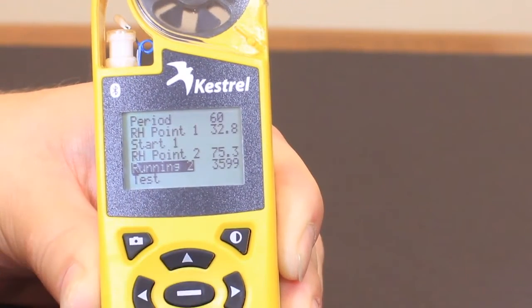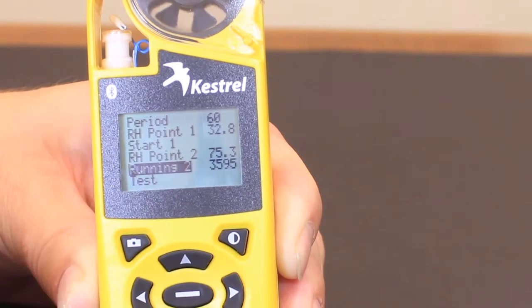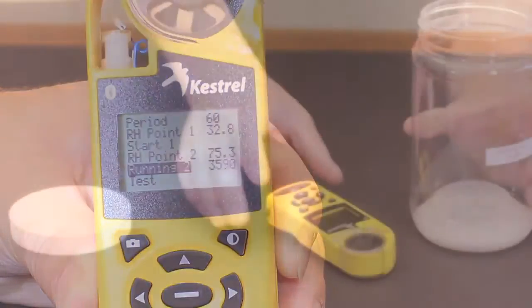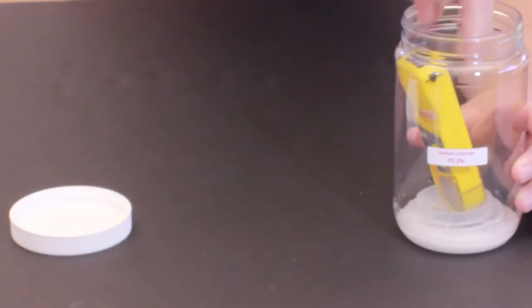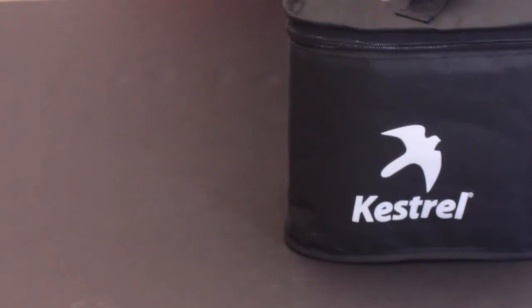Again, it'll start counting down from 3600 seconds. We're going to take the kestrel, put it now in the second calibration chamber, and wait an hour. We're going to open this up, put it in the sodium chloride chamber, tighten this up, and put it back in to leave undisturbed for another hour.